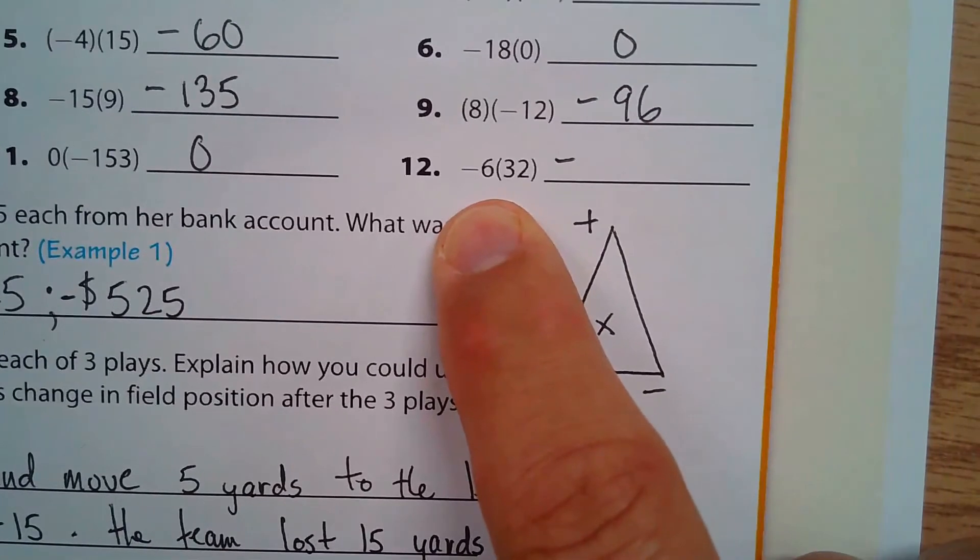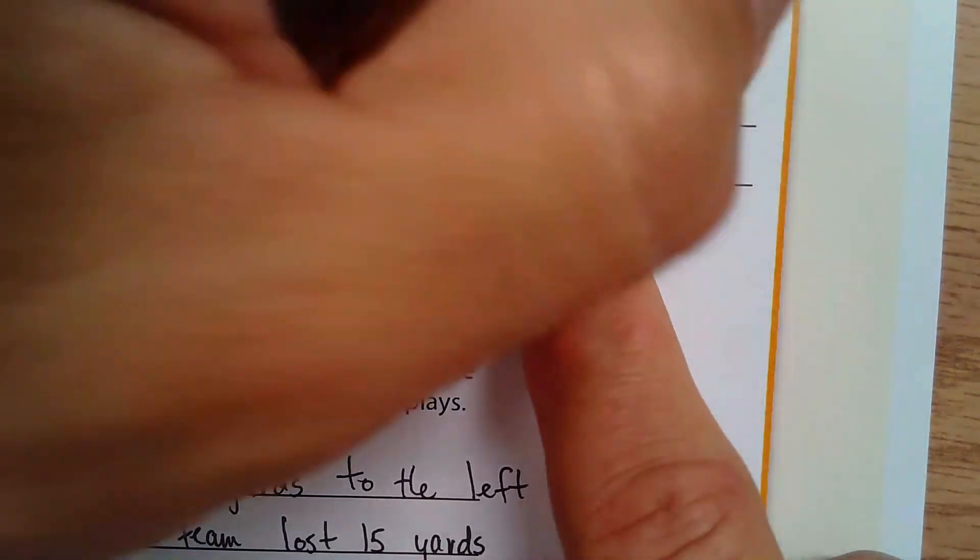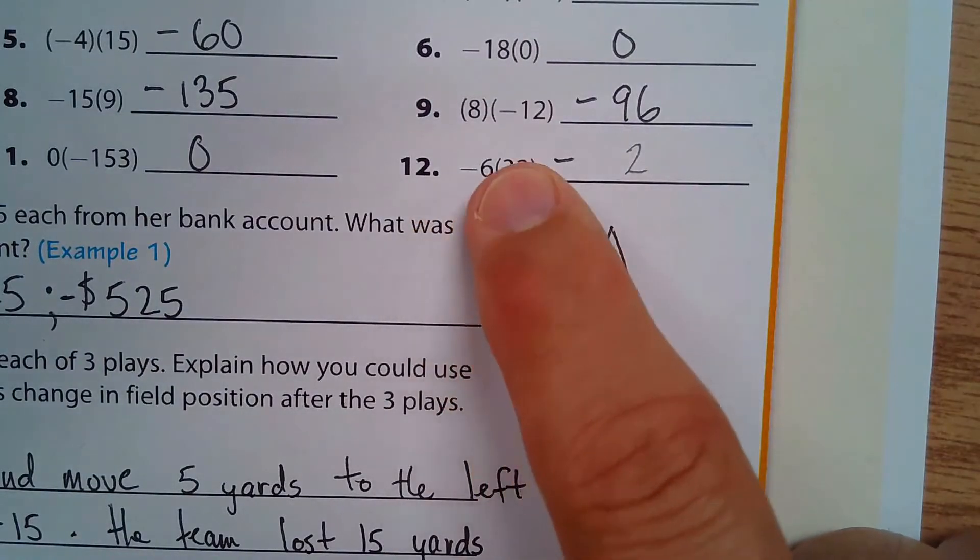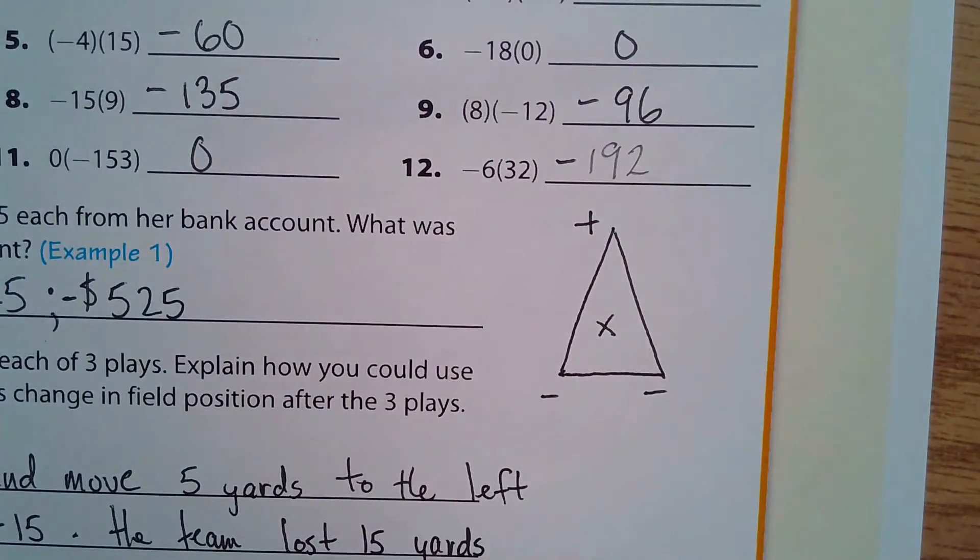Oh, I skipped this one. 6 times 32—well, 6 times 2 is 12, so it's 212. 6 times 3 is 18 plus 1 is 19, so that should be 192, negative 192.